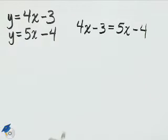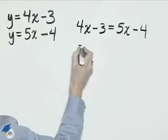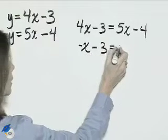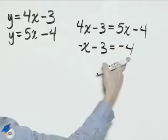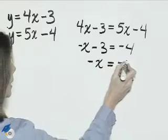And now to solve this, if we bring 5x over to the left-hand side, that will be negative x minus 3 equals negative 4. Adding 3 over to the right, negative x equals negative 1.